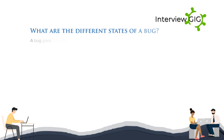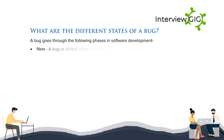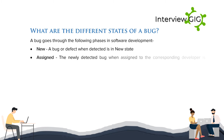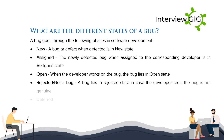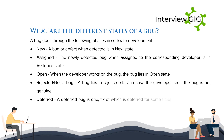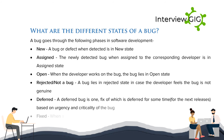What are the different states of a bug? A bug goes through the following phases: New — when a defect is first detected; Assigned — when the bug is assigned to the corresponding developer; Open — when the developer works on the bug; Rejected — when the developer feels the bug is not genuine; Deferred — when the fix is deferred to a future release based on urgency and criticality; Fixed — when the bug is resolved by the developer.